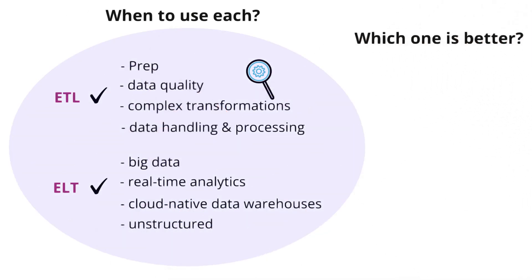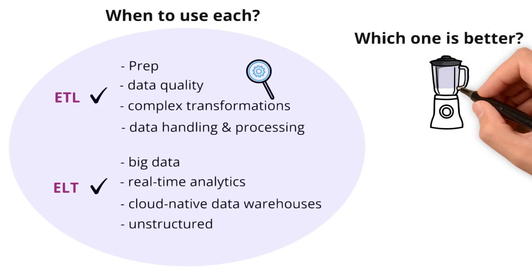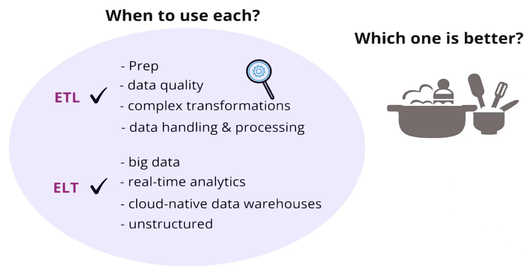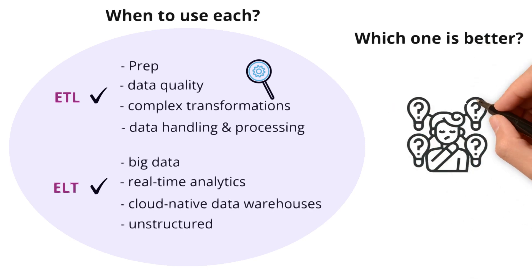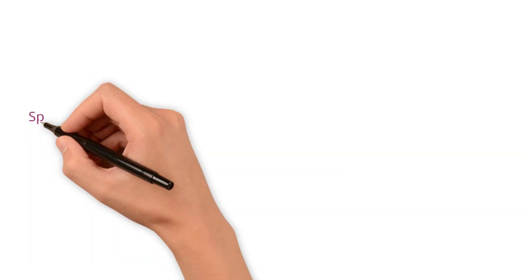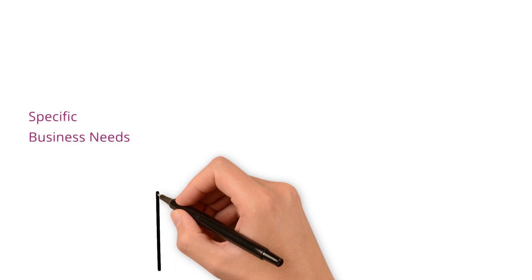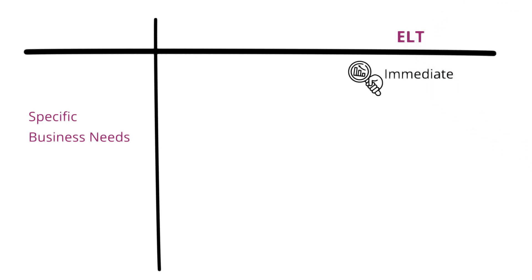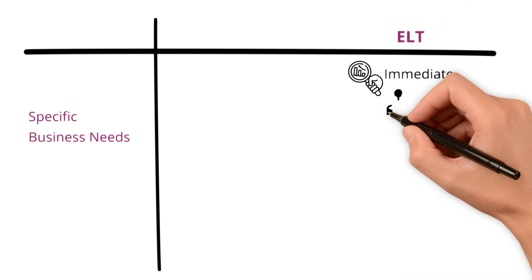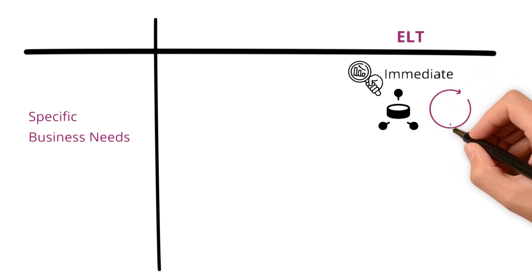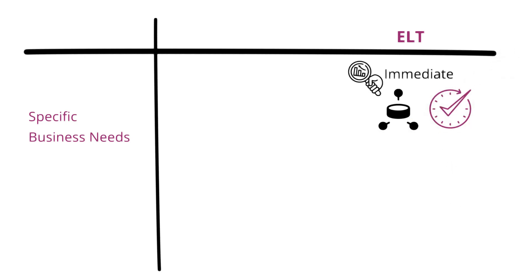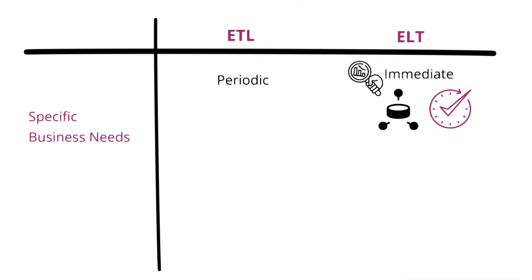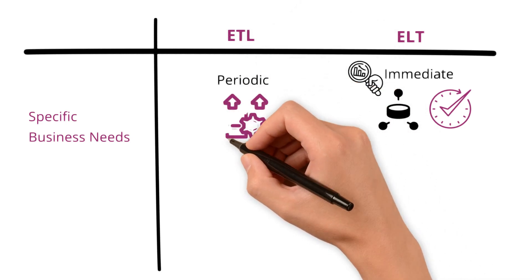So, which one is better? It's like asking whether a blender is better or a slow cooker — they each have their purpose based on what you are preparing. Let's look at different considerations for deciding. First, specific business needs: if your analytics require immediate, up-to-the-minute data, ELT systems excel by leveraging the power of modern data warehouses for real-time insights. On the other hand, if your reporting is periodic and needs deeply processed information, ETL is your go-to, allowing for intricate transformations prior to loading.